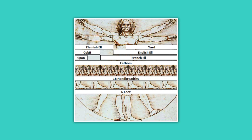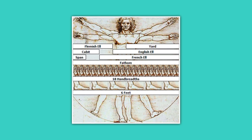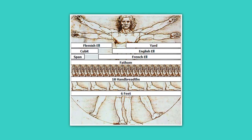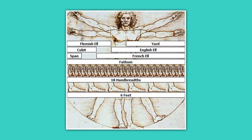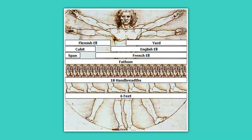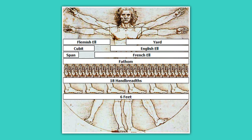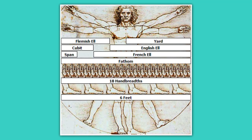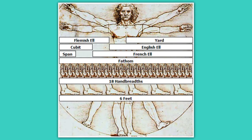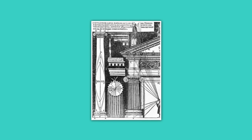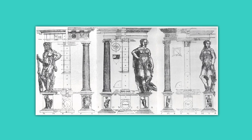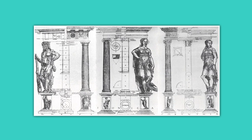In order to explain symmetry, Vitruvius used the human body analogy, where Harmony and Symmetry are found between the forearm, foot, palm, finger, and all the other body parts. And the same concept applies to the perfect building.